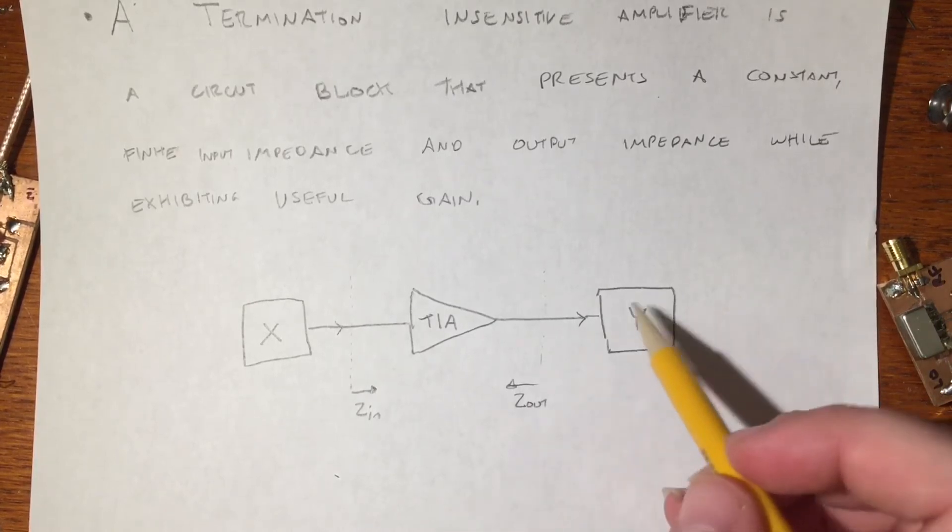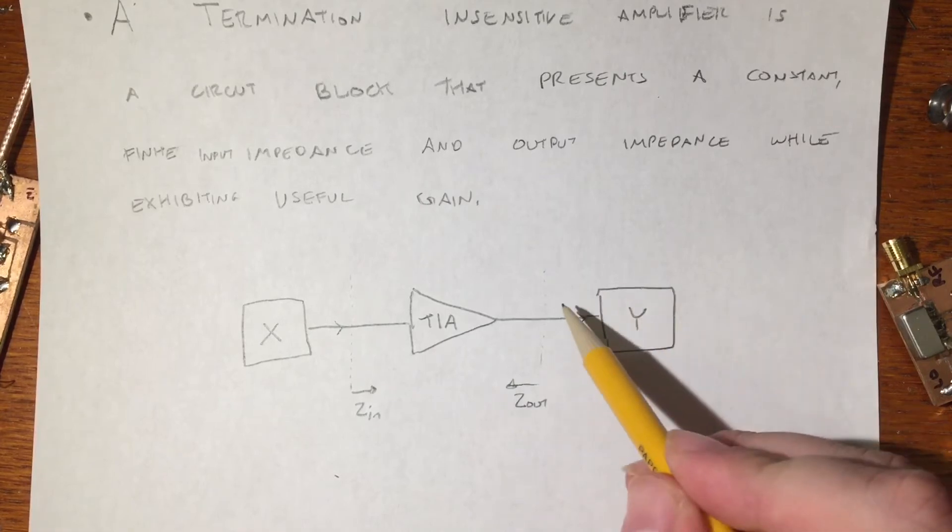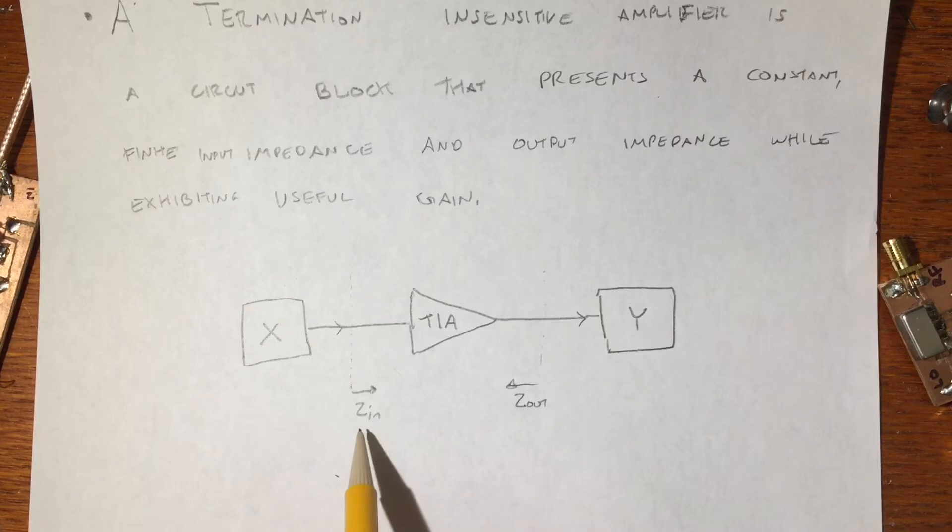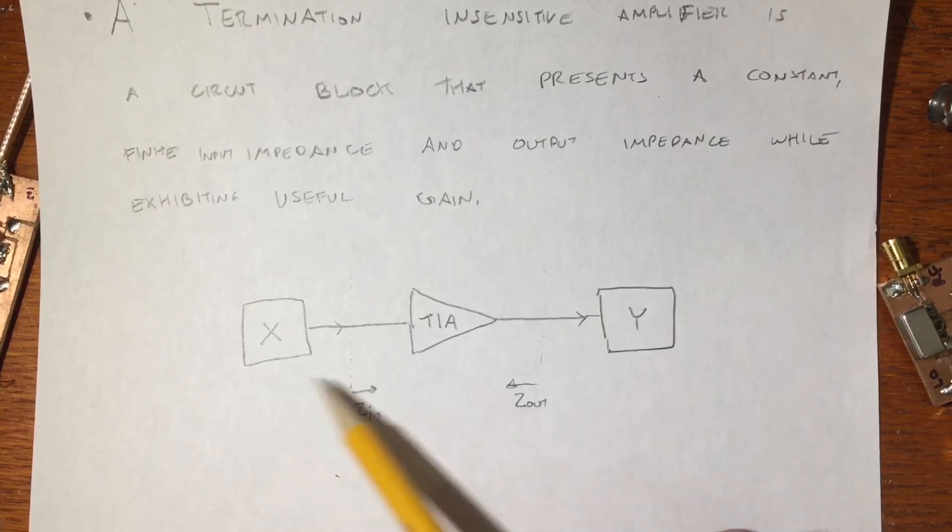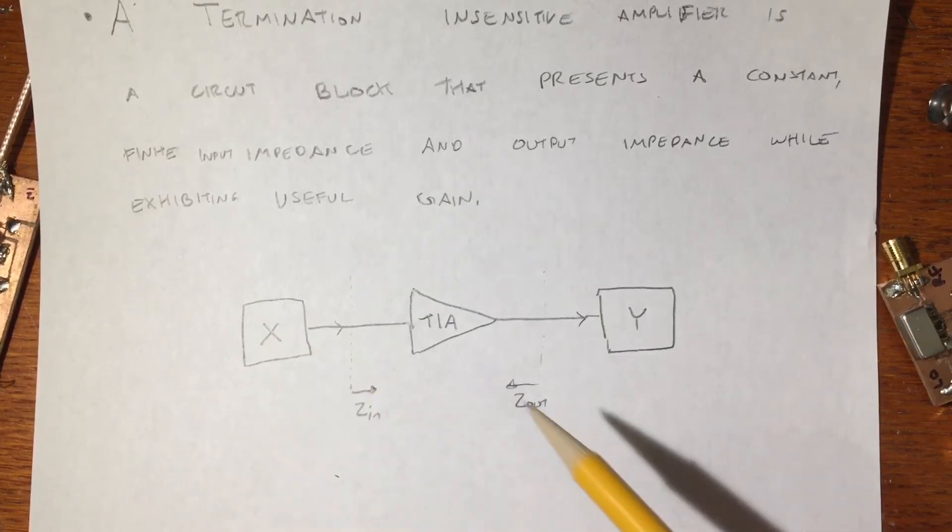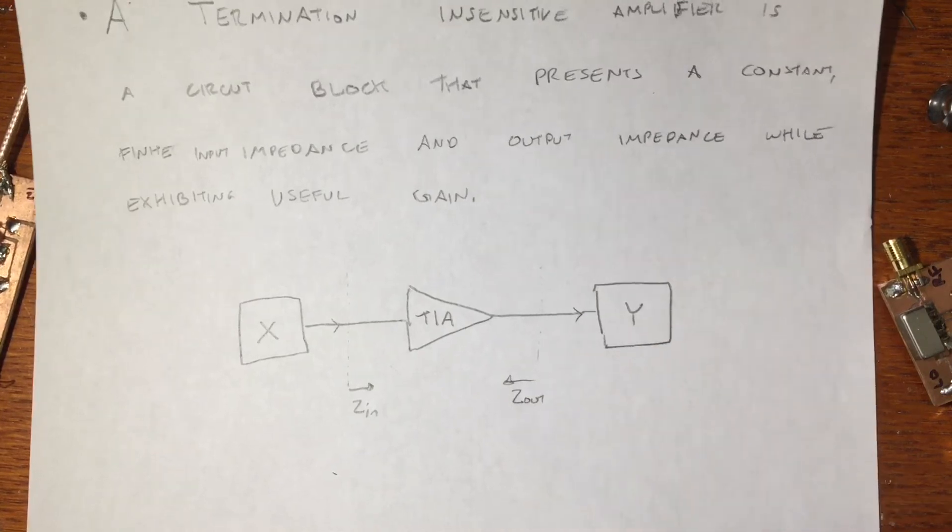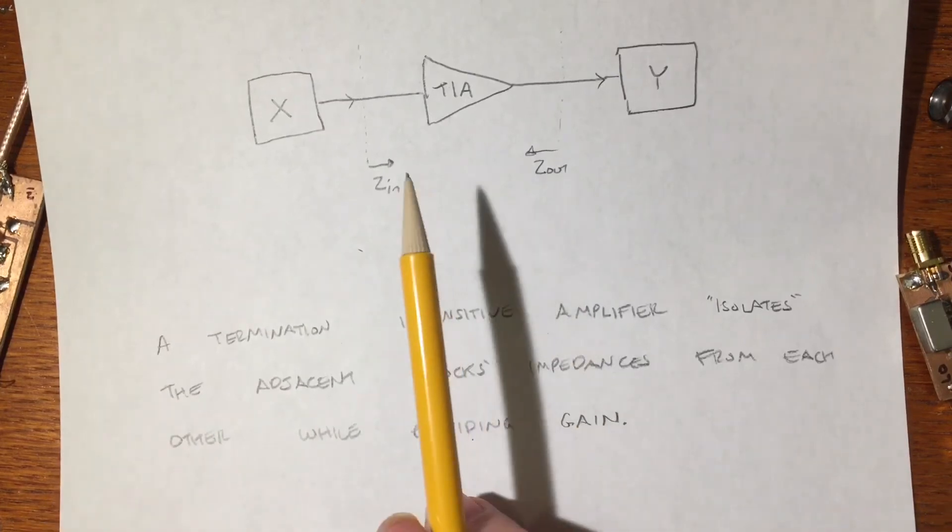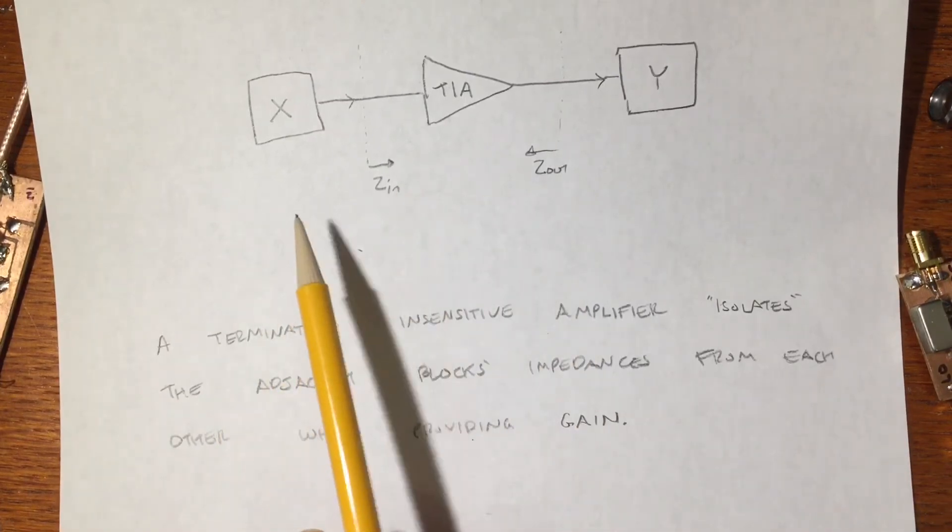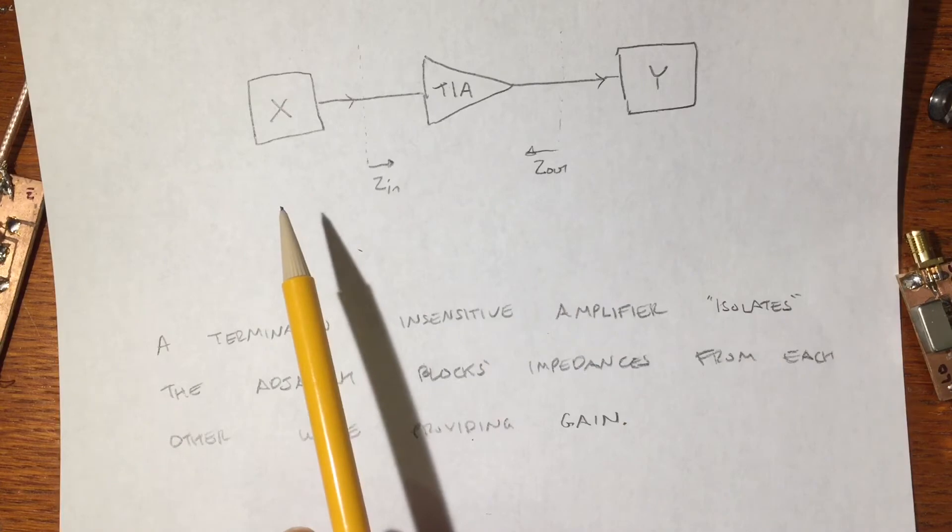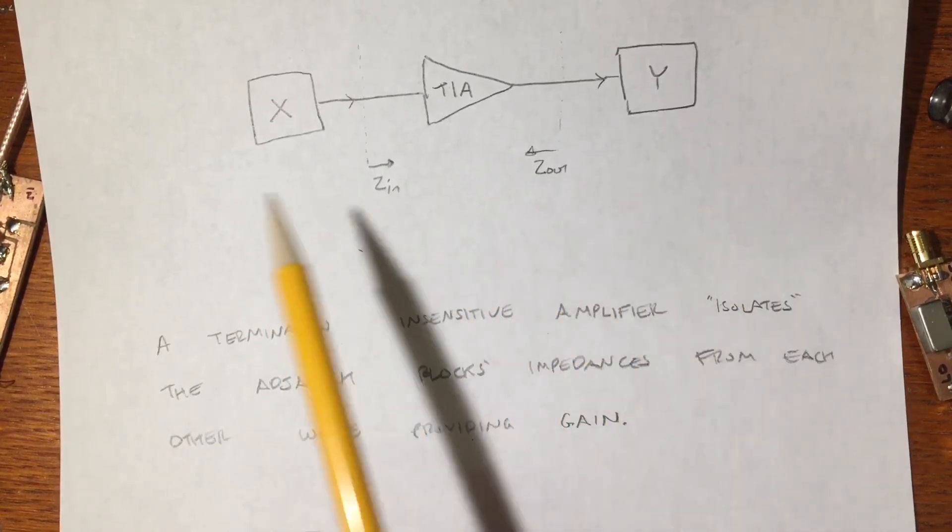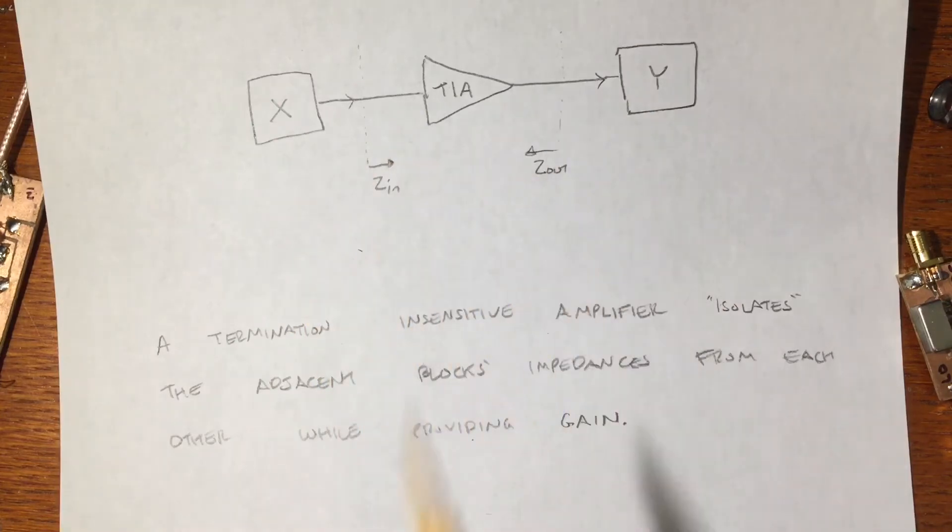And most importantly, that no matter what the input impedance is of this block Y, this block X will always see the same input impedance, and vice versa. No matter what I'm feeding this amplifier with, the output block will always see this constant output impedance Z out. Or to put it another way, a termination-insensitive amplifier isolates the adjacent blocks from one another, while providing them with the same input and output impedance as they would normally see, while providing some gain across the amplifier block.